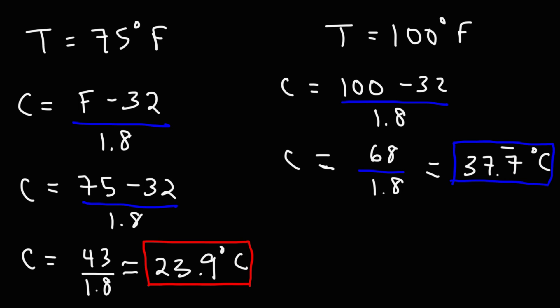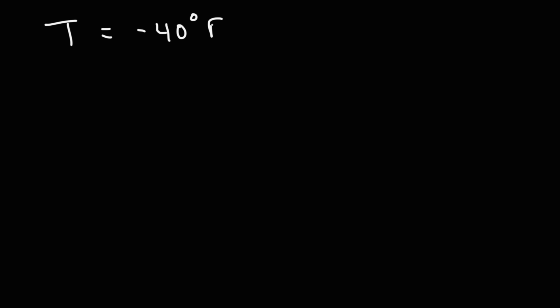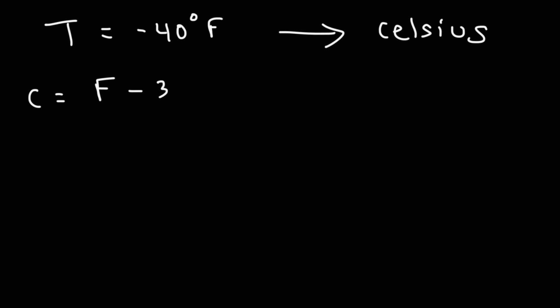Now you know how to convert from Fahrenheit to Celsius, but let's work on one more example. This particular example is going to be a somewhat unusual one. Let's say the temperature is negative 40 degrees Fahrenheit — go ahead and convert that to Celsius. Using the formula, the Celsius temperature is going to be the Fahrenheit temperature minus 32, over 1.8.